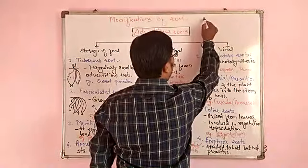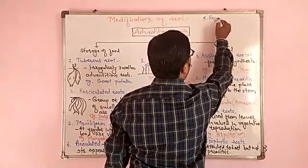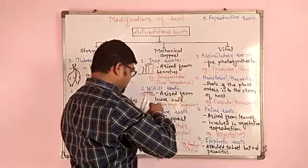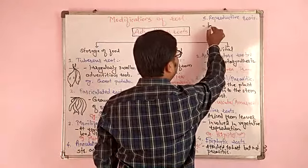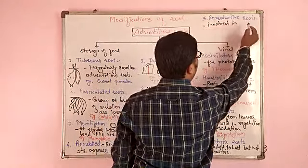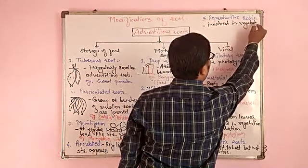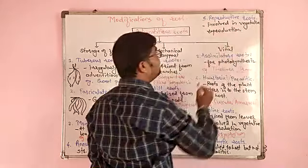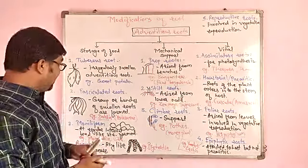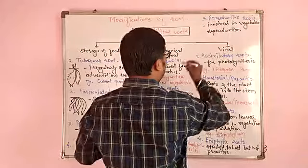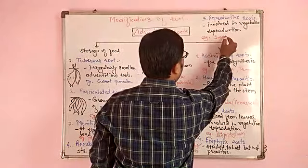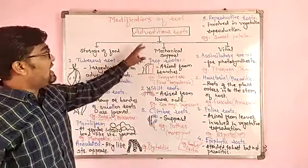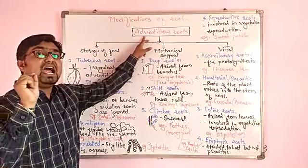The last modification is reproductive roots — roots involved in vegetative reproduction. The example is sweet potato. So these are the modifications of adventitious roots.